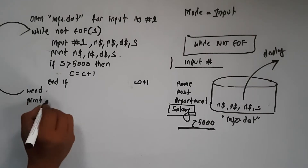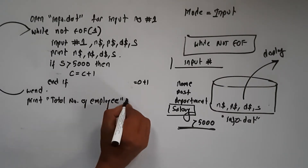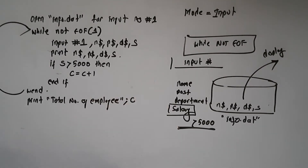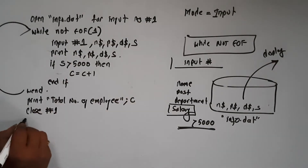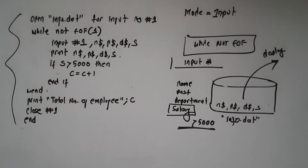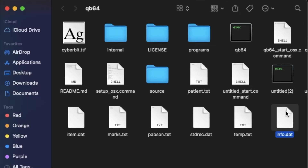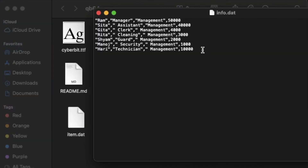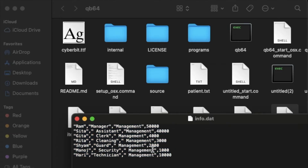Now we print: 'Total number of employees getting salary greater than 5000 is C.' Then we close the file with CLOSE #1. If you have 3 or 4 marks questions, you will need to practice this. You need to display all records from the info.dat data file and store the data.